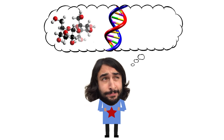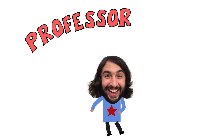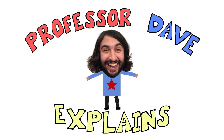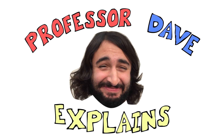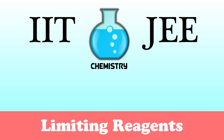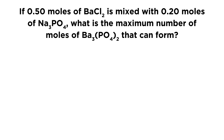Today we're going to check out a problem regarding limiting reagents. The question is: if 0.5 moles of barium chloride is mixed with 0.2 moles of sodium phosphate, what is the maximum number of moles of barium phosphate that can form?